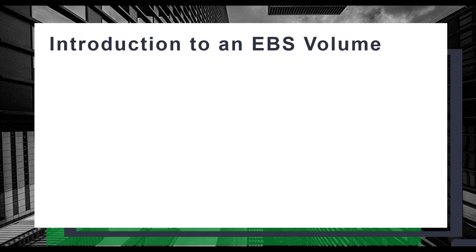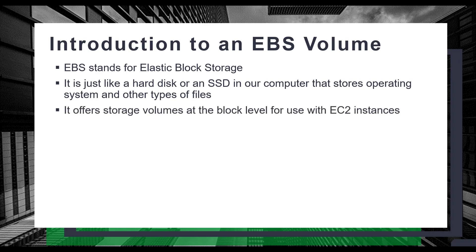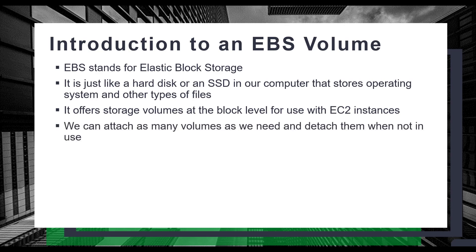EBS stands for Elastic Block Storage. It is just like a hard disk or an SSD in our computer that stores the operating system and other types of files. The main purpose of Amazon EBS is that it offers storage volumes at the block level for use with EC2 instances.